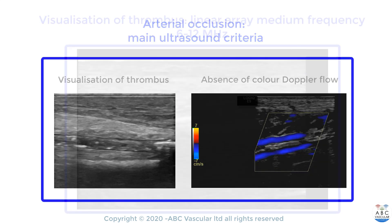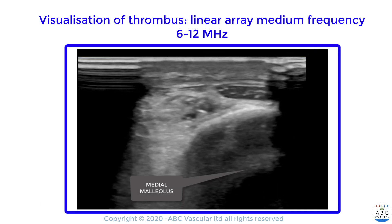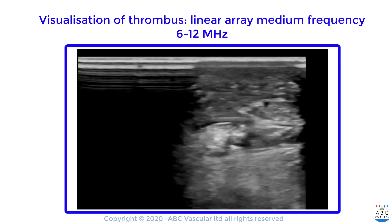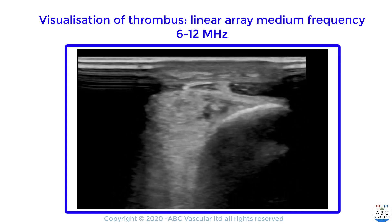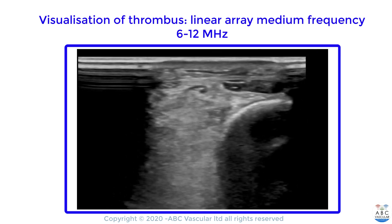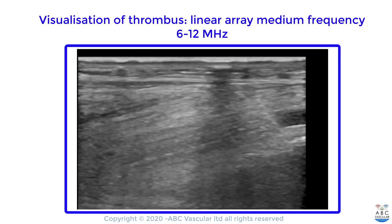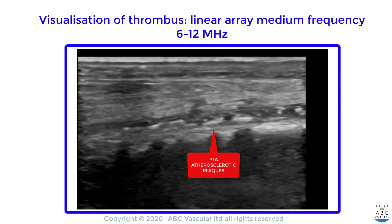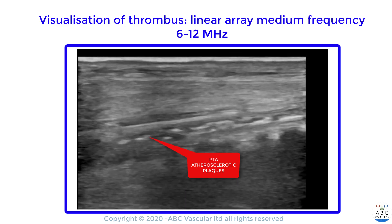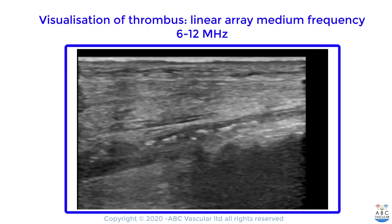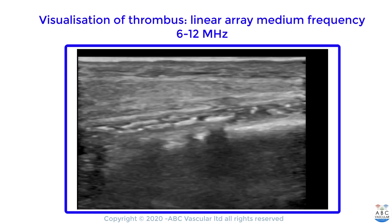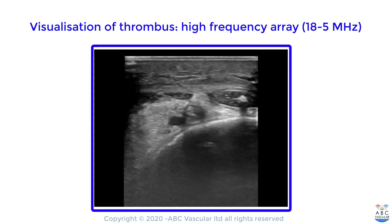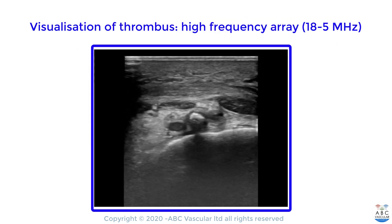The posterior tibial artery is a superficial structure at the level of the medial malleolus, therefore we can use a linear array to identify such artery and to visualize the presence of atherosclerotic disease throughout the posterior tibial artery. In order to improve the visualization of such atherosclerotic disease, we can use at the level of the distal posterior tibial artery a linear array with higher frequency.